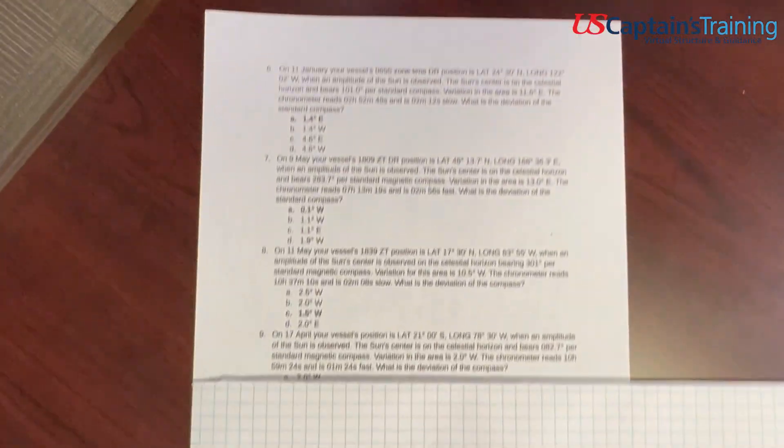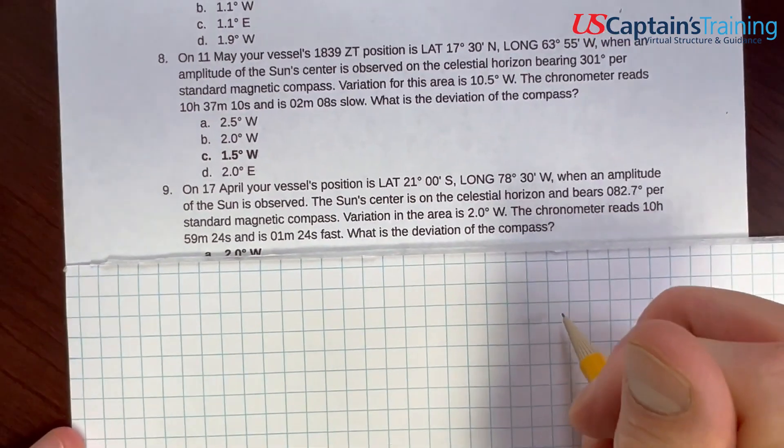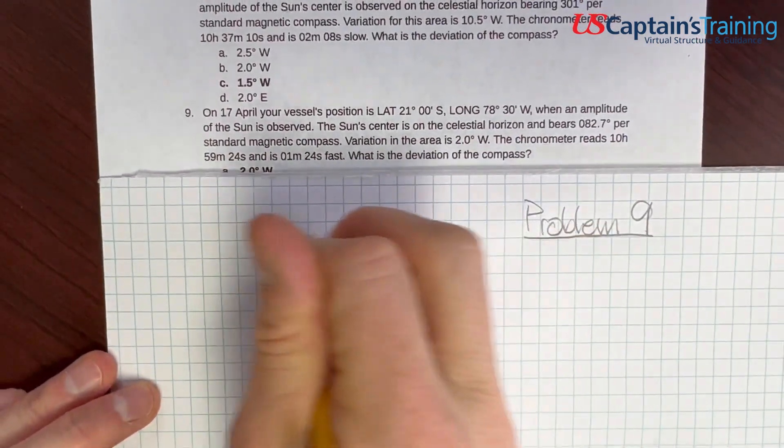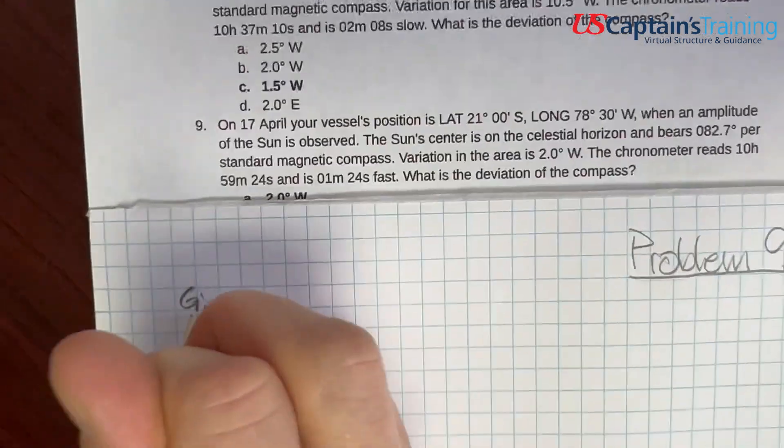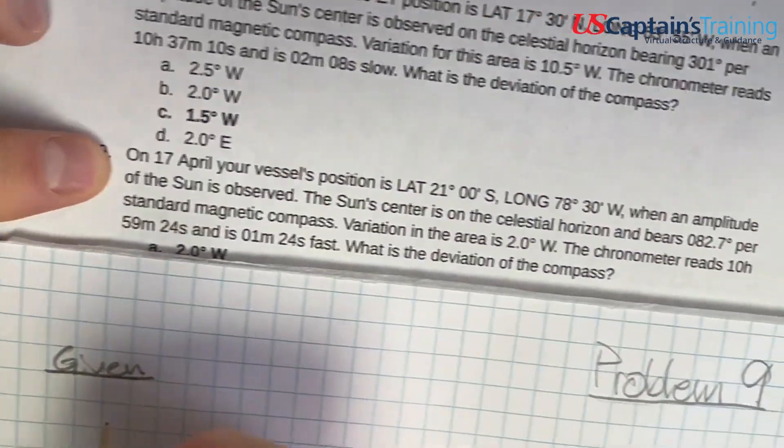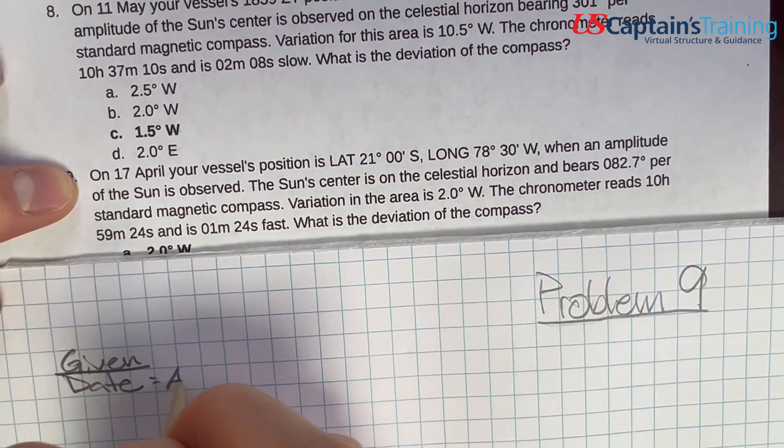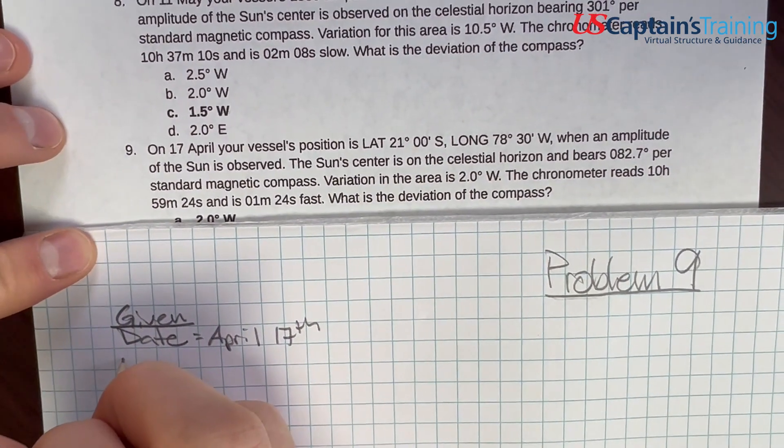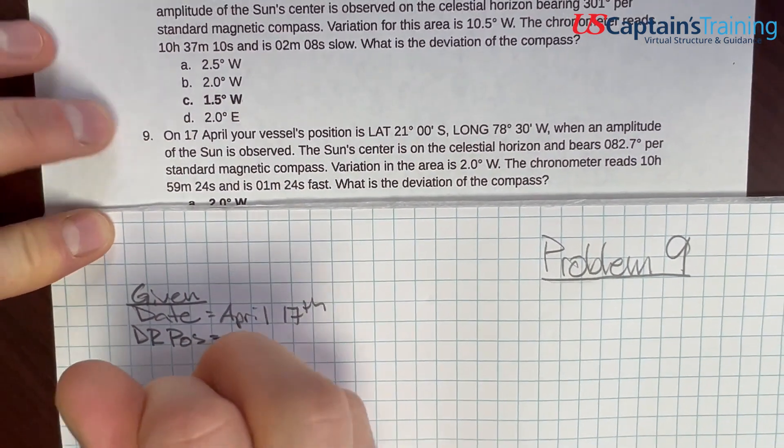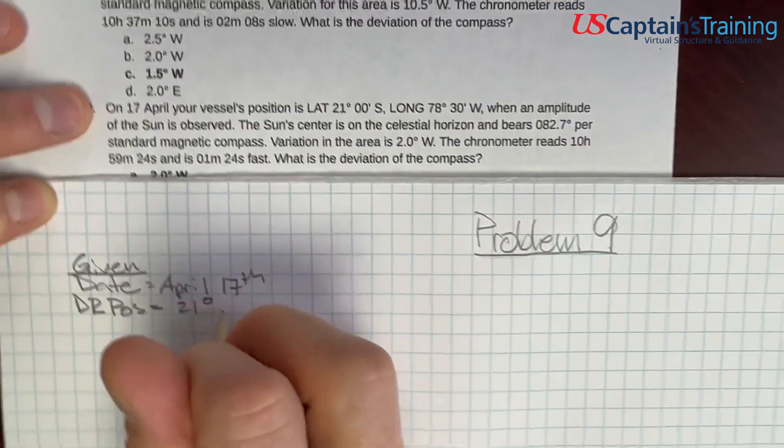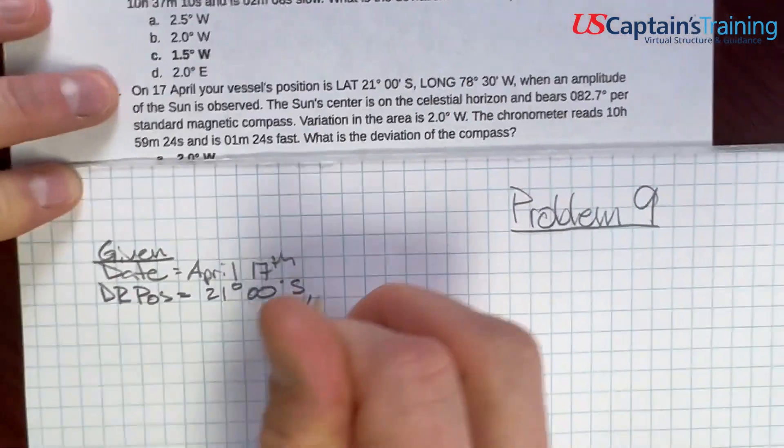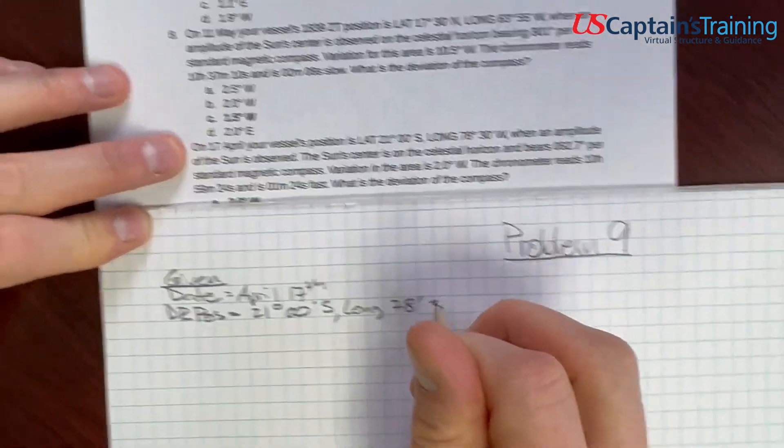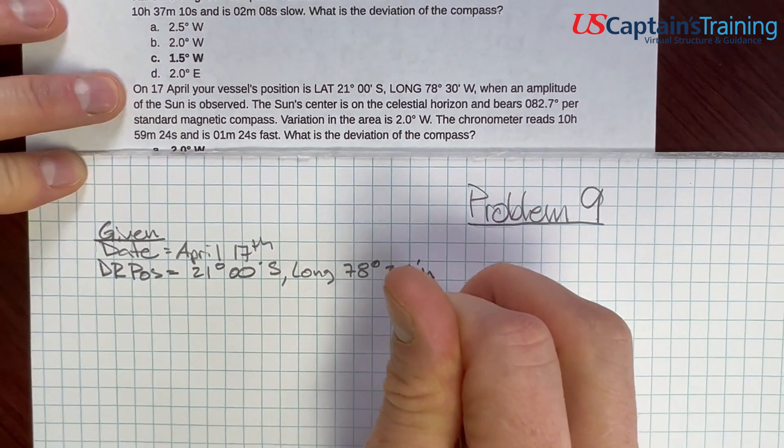All right, we have compass deviation by amplitude, practice problem nine. Let's jot that down here. We're on problem nine. And in each of these problems, we are given information. Let's check out this information that's given. First one's the date. It's April 17. The date is given as April 17. And the vessel's position, so our DR position, is equal to 21 degrees 00 minutes south. And the longitude is equal to 78 degrees 30 minutes west.